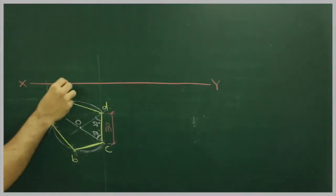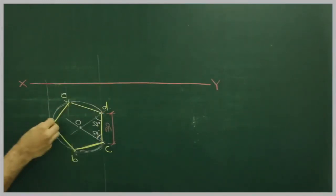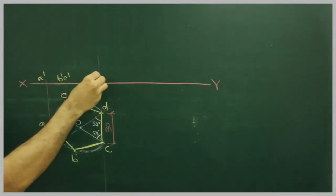After drawing this, we will project this point up. We get A dash, B dash, C dash, and D dash.